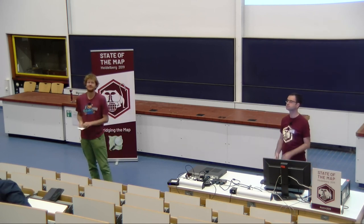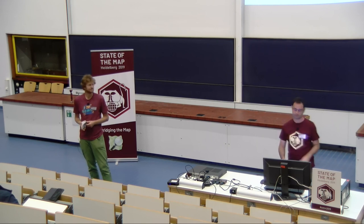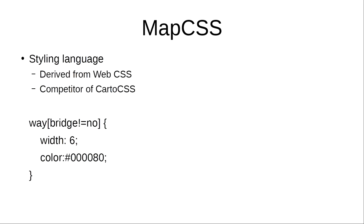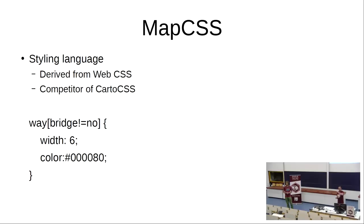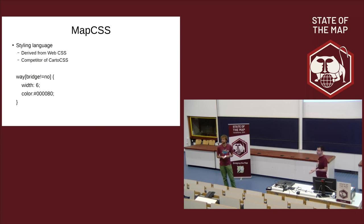Other question: Can you describe some of the differences between MapCSS and CartoCSS? Answer: I don't have a specific example here, but these are two competing languages for map styling. CartoCSS was started by Mapbox. However, we're not particularly interested in switching — JOSM already supports MapCSS and not CartoCSS, and there is already a large set of existing rules. So it's not really a choice; MapCSS works well already.